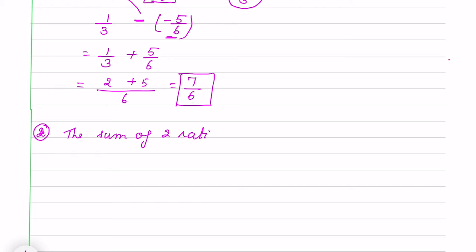if we add two rational numbers, the sum is -4/3 and one number is -5, find the other.